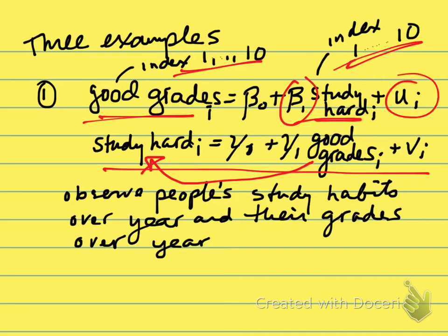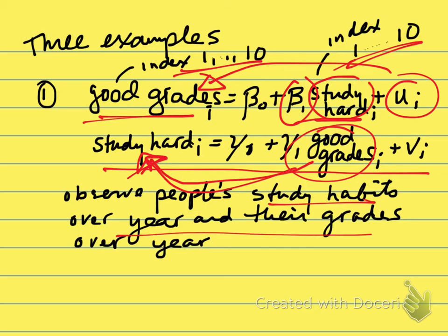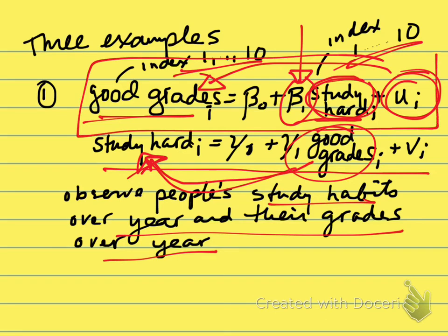In this setup, if uᵢ is high, that leads somebody to get good grades, but good grades then lead them to study harder. So if we're measuring study habits and grades over the course of several years, the unobserved error will be correlated with their study habits, and our estimated beta 1 will be biased. If we just estimate this equation alone and act like there is no simultaneous causality, it'll look like studying hard really generates high grades — but we're forgetting that high grades are also leading people to study hard. Beta 1 is conflating those two effects.